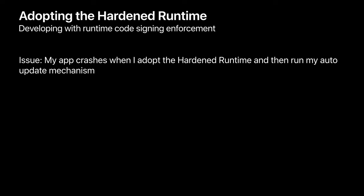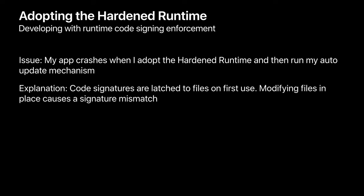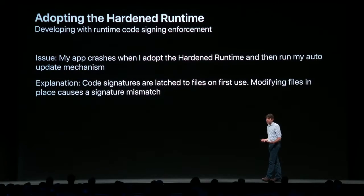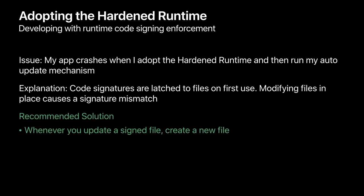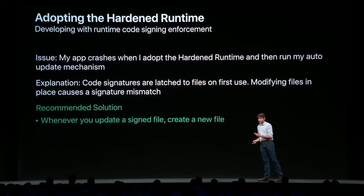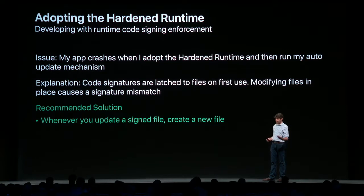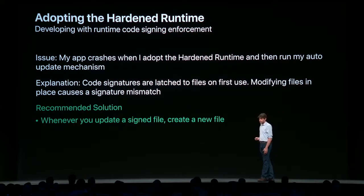Another issue we've seen with runtime code signing enforcement is crashes while updating an app. This is because code signatures are latched to files on first use in the kernel. That means if you modify a file that has been run and was signed, it will no longer match the signature in the kernel and you'll see a code signature violation. Instead of modifying existing files on disk, always create a new file with the updated changes and move the old file out of the way. This ensures the new file gets its code signature on first use without causing violations.